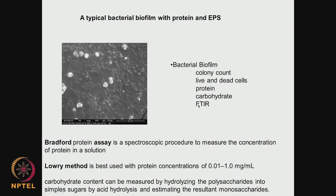We can also do FTIR — Fourier Transform Infrared Spectroscopy, which I talked about in the previous class — to determine whether there are amides present, whether there are OH groups present, and so on. This is how we analyze the biofilm on a biomaterial surface.